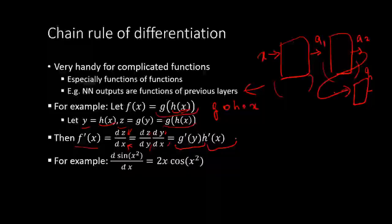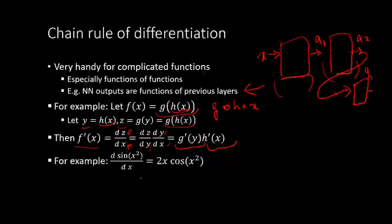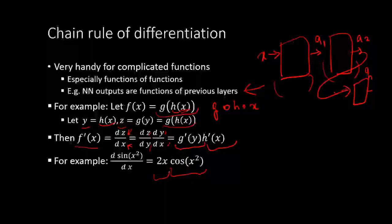Here's an example: the derivative d/dx of sin(x²). We know the derivative of sin and the derivative of x². Using chain rule, we get the derivative of the outer function — cos(x²) — times the derivative of the inner function x², which is 2x. So the result is cos(x²) times 2x. This is how we get the derivative of a more complex function, and this same concept will be applied in neural networks.